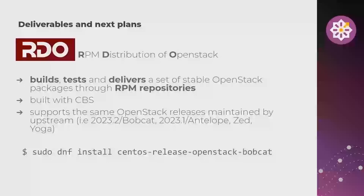Currently, we support the same OpenStack releases maintained by upstream — we have four releases, but Yoga will transition to unmaintained status very soon, so we'll end up with three releases. At the end, you just run a DNF install command and you get all the repositories required and enabled to install any OpenStack project on your CS9 machine.